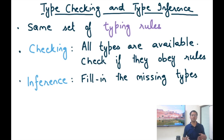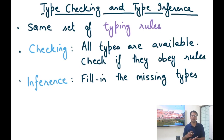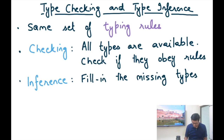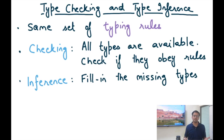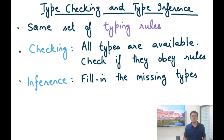In contrast, inference is about filling in the missing types. When doing type inference, some types are missing, and you use the same set of typing rules to fill them in. As opposed to checking whether type rules are satisfied, if a type is not available, you infer it. Type inference may not always be possible — the context may not be enough to uniquely specify a type, since multiple types could obey the rules. In general, inference is not always possible, but often it is.